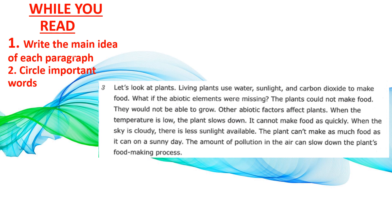Paragraph 3: Let's look at plants. Living plants use water, sunlight, and carbon dioxide to make food. What if the abiotic elements were missing? The plants could not make food and would not be able to grow. Other abiotic factors affect plants too. When the temperature is low, the plant slows down and cannot make food as quickly. When the sky is cloudy, there is less sunlight available and the plant can't make as much food as on a sunny day. The amount of pollution in the air can also slow down the plant's food-making process. Pause the video, write your main idea, and circle important words.